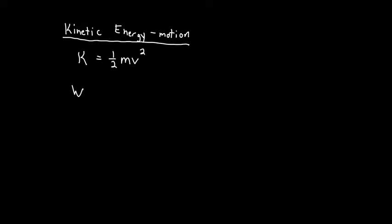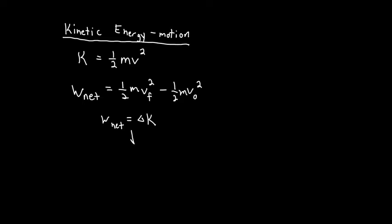Kinetic energy is related to work through something called the work-energy theorem, where the net work equals one-half times mass times final velocity squared, minus one-half times mass times initial velocity squared. The work you do is equal to the change in kinetic energy — net work equals delta K. This equation is the work-energy theorem, a fundamental result in any introductory physics class.